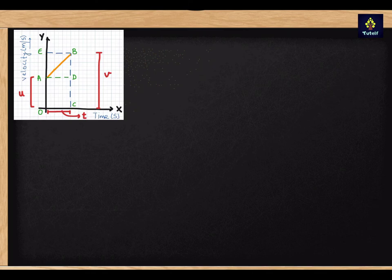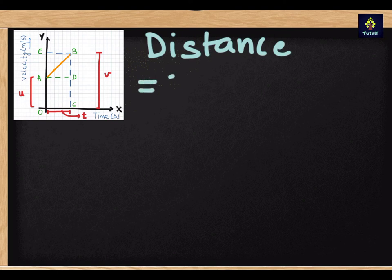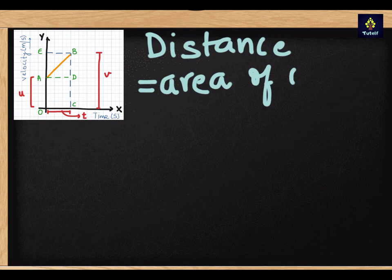The distance travelled by the object is given by this area under the graph. So the distance travelled is area of trapezium, since this is a trapezium O, A, B, C.